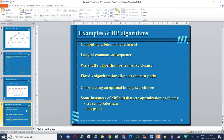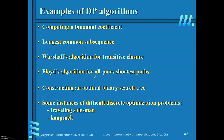Finally, some examples of dynamic programming problems include: computing the binomial coefficient, finding the longest common subsequence, Warshall's algorithm to find the transitive closure of a graph, Floyd's algorithm to find all-pairs shortest path, constructing an optimal binary search tree, and optimization problems like the traveling salesman problem and the knapsack problem.